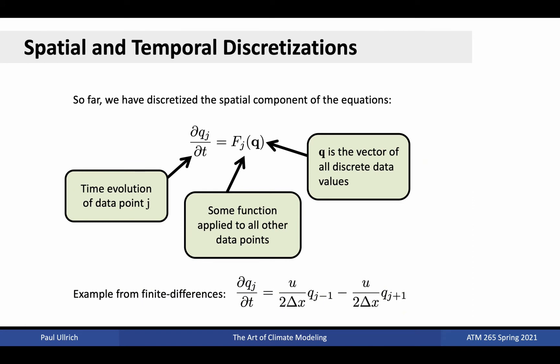As mentioned earlier, through the process of spatial discretization, we now have a set of coupled ordinary differential equations, one for each degree of freedom in the data. In the most general sense, this means we have a set of differential equations where the left-hand side is the time evolution of Q at the point j, and the right-hand side is a function whose argument is the vector of all discrete data values.